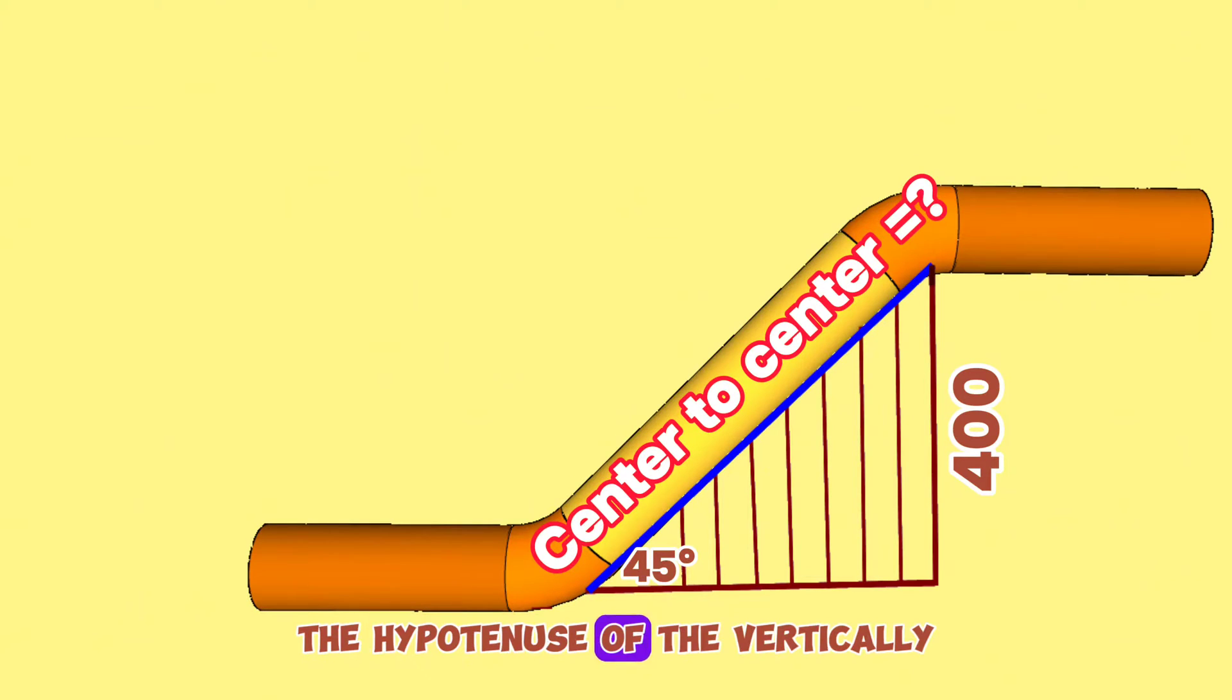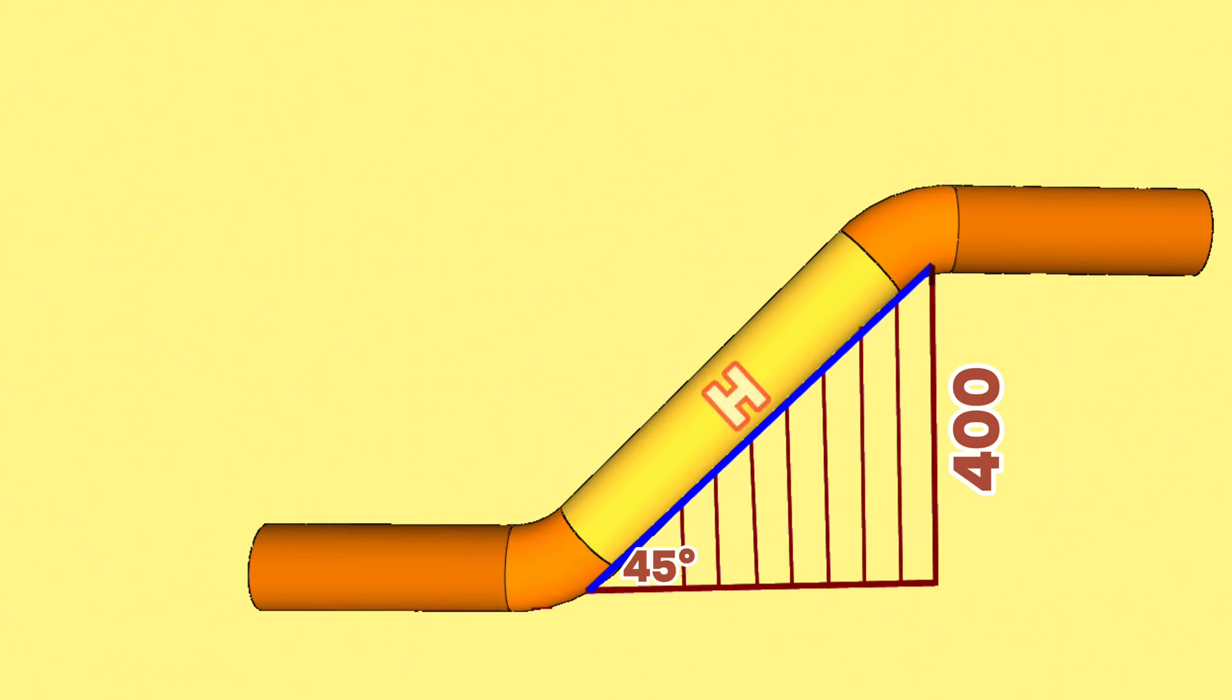The hypotenuse of the right-angle triangle is the distance between the elbows in the pipeline. Let's mark the hypotenuse of this right-angle triangle with the letter H. Since one of the angles of this right triangle is 45 degrees, automatically the other angle will be 45 degrees and the other side will be 400 millimeters as well.